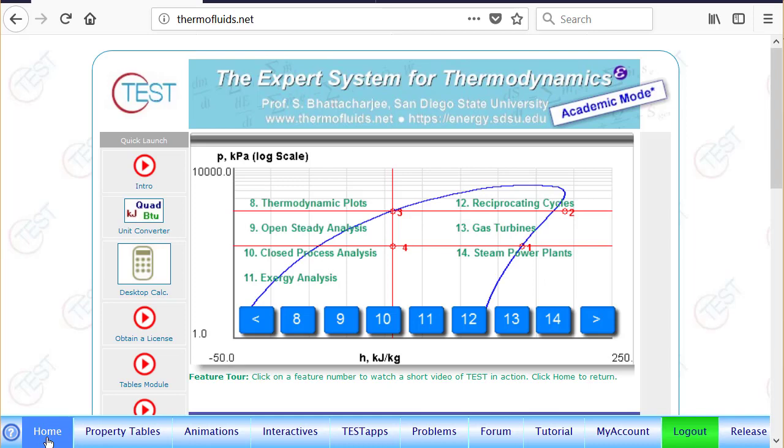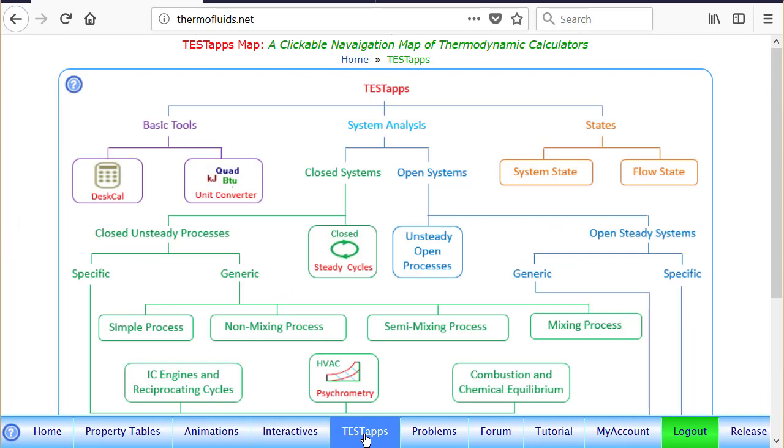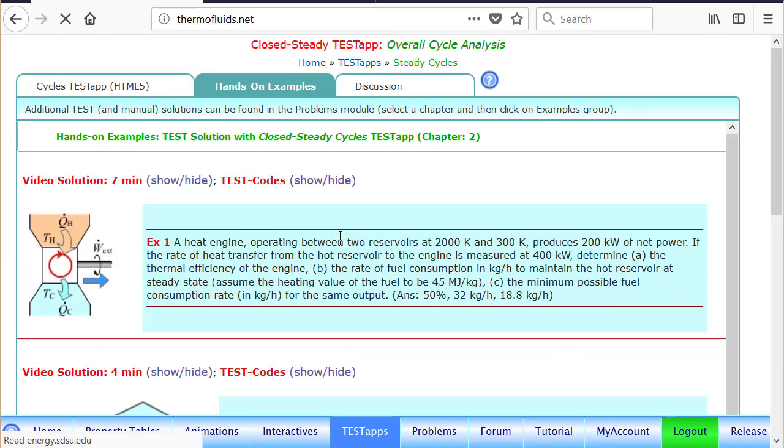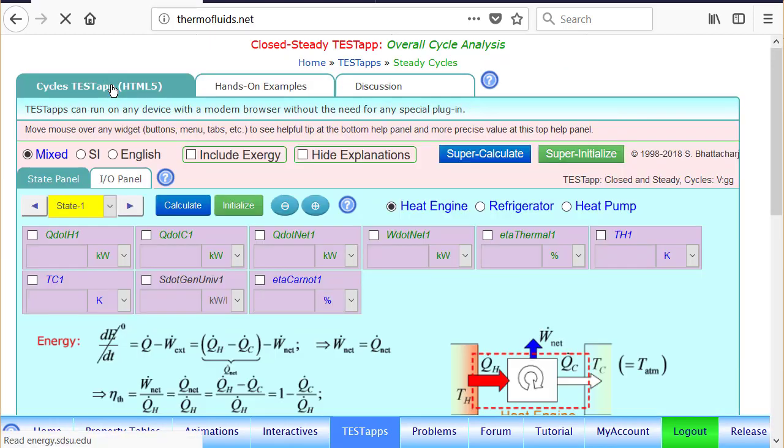So I've already logged in, and we first go to the test steps page. Refrigeration cycle will obviously follow a closed system, a closed cycle, and a closed cycle is right here. Go to the HTML5 page to launch the test step.